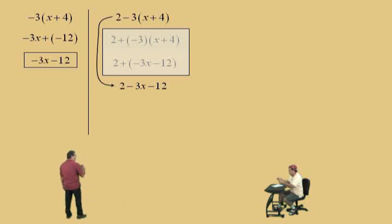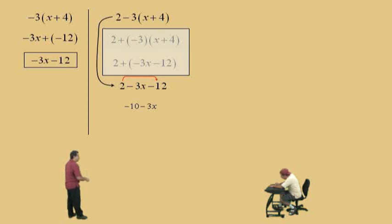You can do that as long as you can explain it to somebody as to why you can do that. So, once we get through that, then we look at our like terms, 2 subtract 12, which is negative 10 subtract 3x, or we generally put the variable first, and we have negative 3x subtract 10. Any answer, either of those 2 answers is correct.